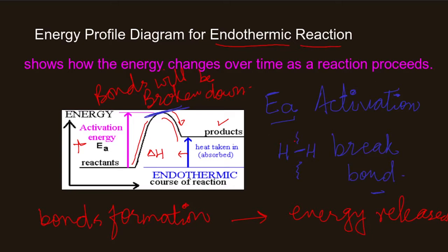When the reactants have more energy than the products, arrows are very important in the Cambridge exam. You have to draw the arrow for activation energy upward from the reactants side. For endothermic reactions the enthalpy change arrow is also drawn upward. The activation energy is the minimum amount of energy required to start the reaction, and since more energy is absorbed than released, the reaction is endothermic.